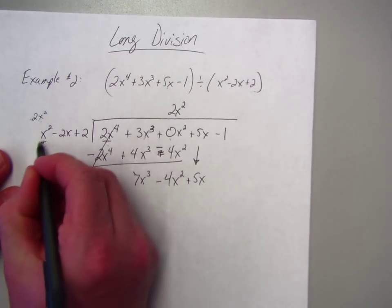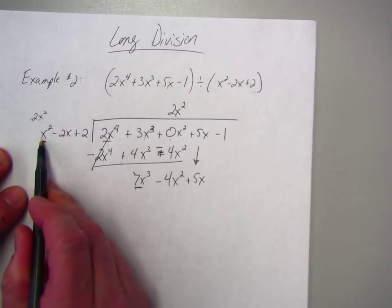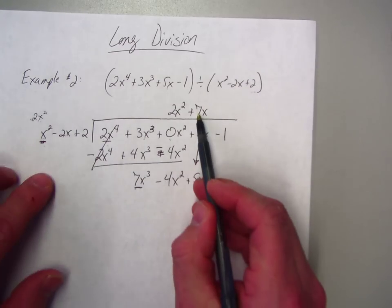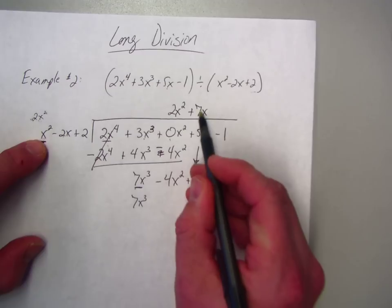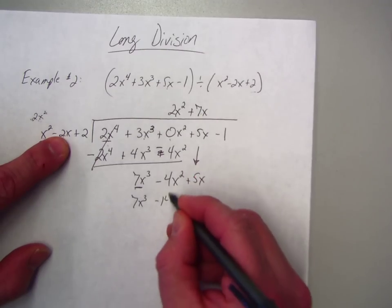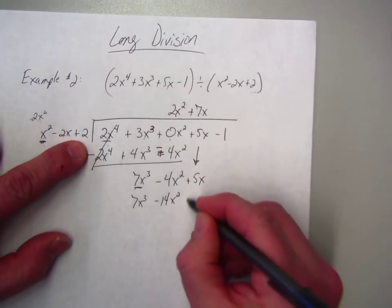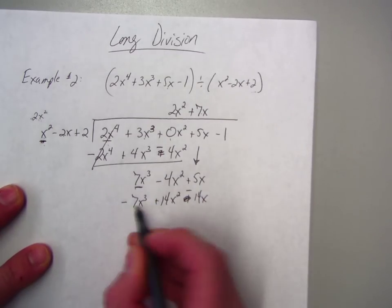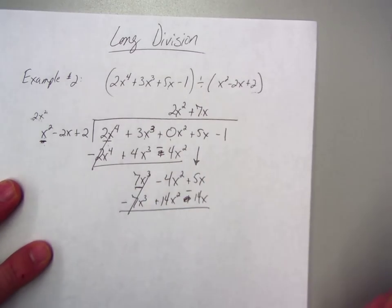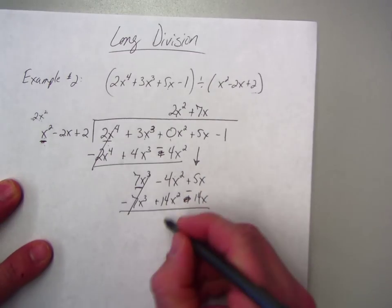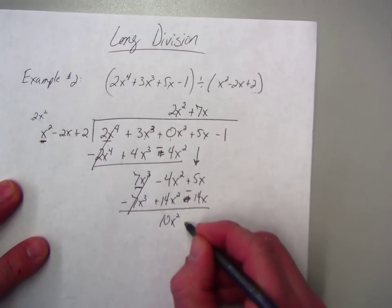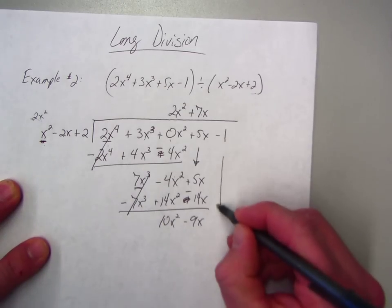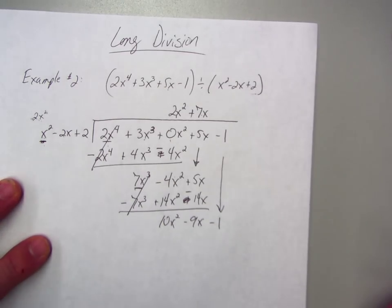And repeat the process. Looking at the first term. So, I must multiply this by 7x. So, 7x times x squared is 7x cubed. 7 times that would be negative 14x squared. Plus 14x. Change the signs. Because we are subtracting. That goes to 0. Then, we get 10x squared. Minus 9x. There's 2 terms here. I'm dividing by 3. So, I'll bring down the last term. And do the process again.